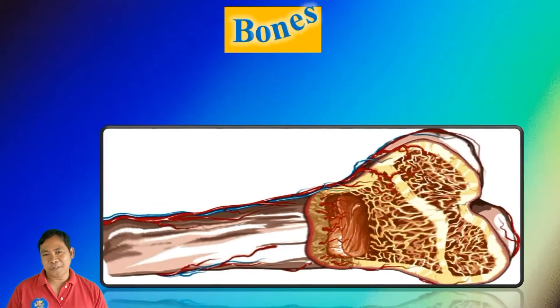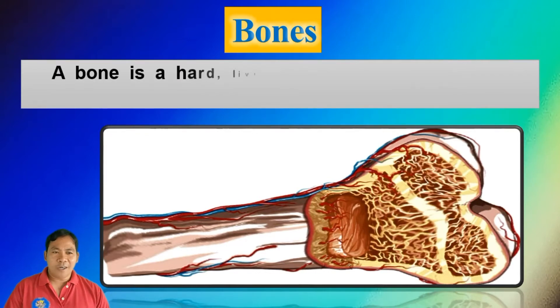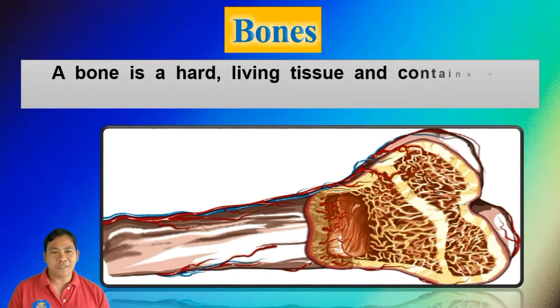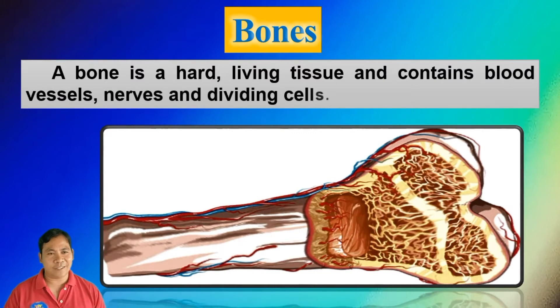Bones. A bone is a hard living tissue and contains blood vessels, nerves, and dividing cells.